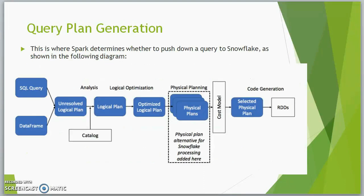How does query plan generation happen? This is where Spark determines when to push down a query to Snowflake. Spark uses a Catalyst optimizer for creating a physical plan — which we call a DAG — to execute a query in the most efficient way. Spark uses rule-based optimization to create an optimized logical plan from the unresolved logical plan, and from there it creates an optimized physical plan using cost-based optimization. This is where the Catalyst optimizer inserts a Snowflake plan as one possible physical plan for Spark to choose based on cost. If the cost of executing in Snowflake is very low, it will push the query to Snowflake for processing.